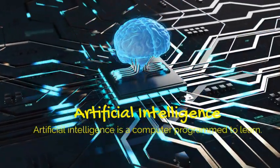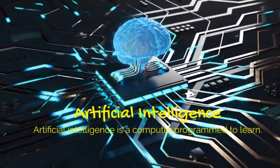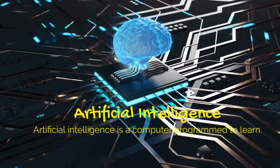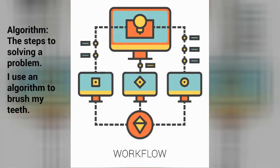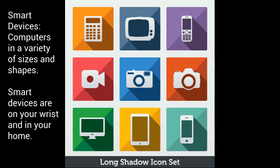Artificial Intelligence is a computer program that can learn. Algorithm: the steps to solving a problem. I use an algorithm to brush my teeth. Smart Devices are computers in a variety of sizes and shapes — on your wrist and in your home.